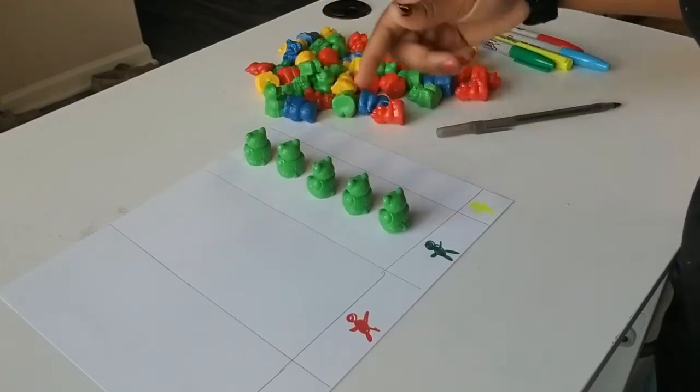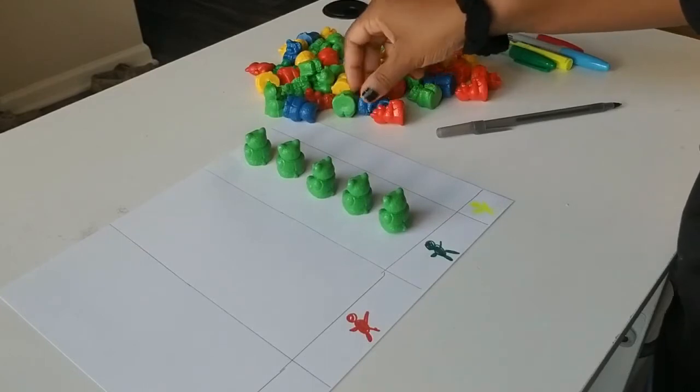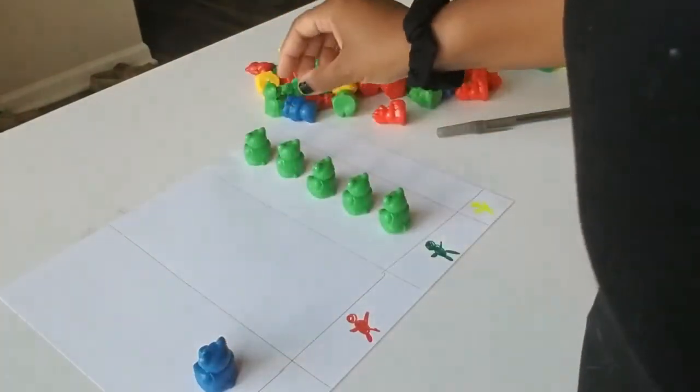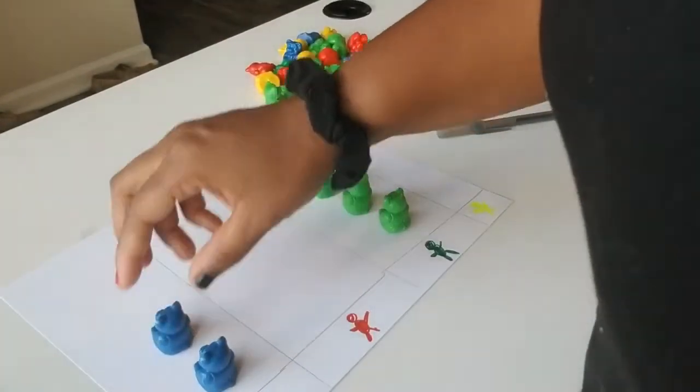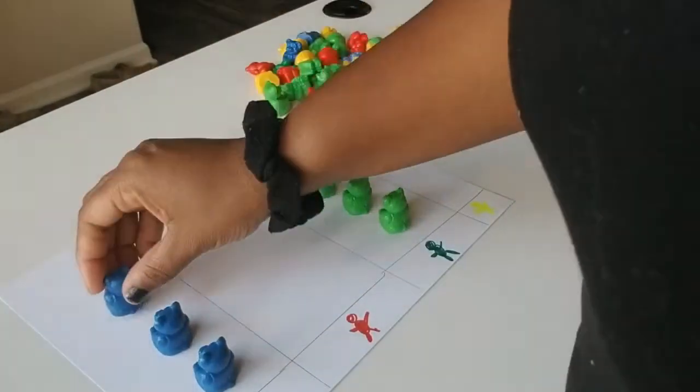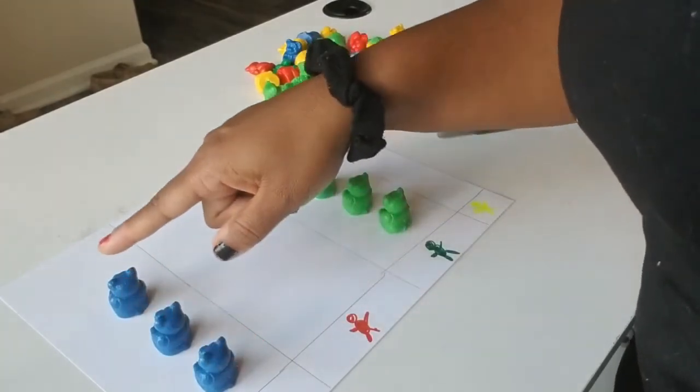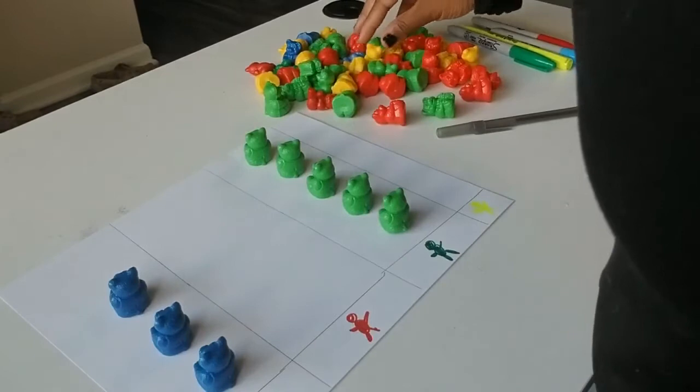Then you can say, hey, can you find me three blue bears and put them in the blue column? One, two, three. And then have the child use one-to-one correspondence and count them back. One, two, three.